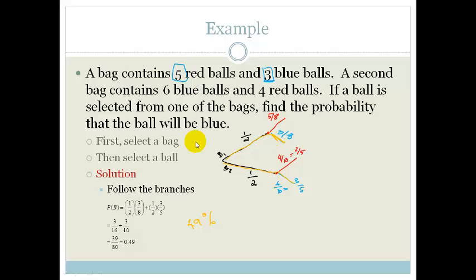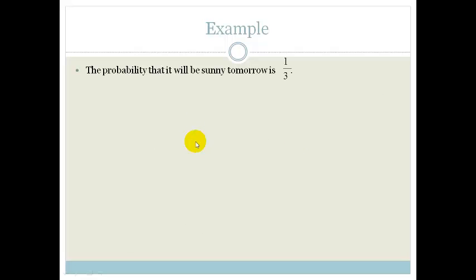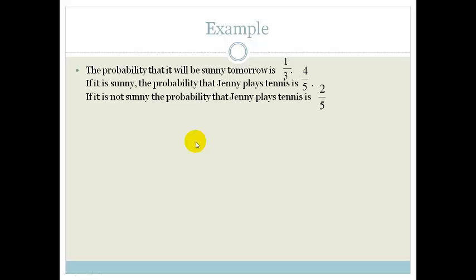Let's do another example. The probability that it will be sunny tomorrow is one third. If it is sunny, the probability that Jenny plays tennis is four fifths. If it is not sunny, the probability that Jenny plays tennis is two fifths. Find the probability that Jenny plays tennis.